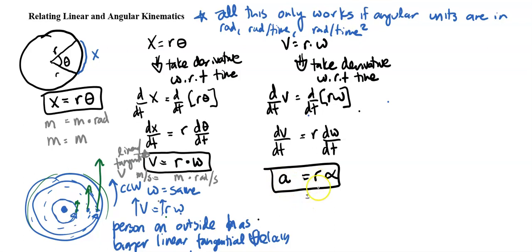Let's look at the last one. So we have r is going to be meters, alpha is radians per second squared. And again, with all this stuff to work, that angular part needs to be radians per something. So we're essentially left with meters per second squared for linear or tangential acceleration. It works out.